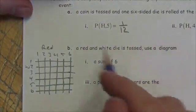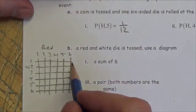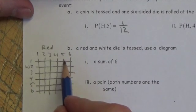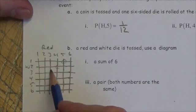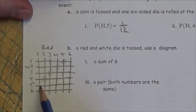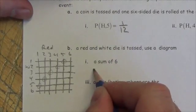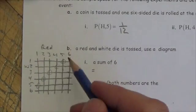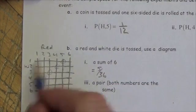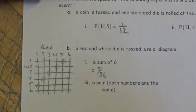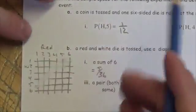Now I'm looking for a sum of six. The combinations are: five and one, four and two, three and three, two and four, and one and five — that gives me a six. So that's one, two, three, four, five outcomes out of a total of 36 different outcomes, giving a probability of 5/36.